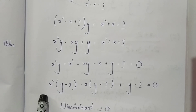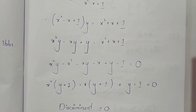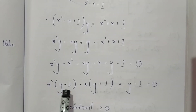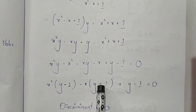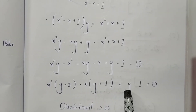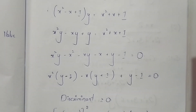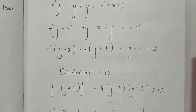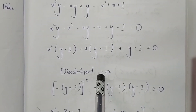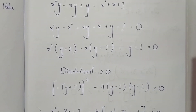This is a quadratic expression where a = (y - 1), b = -(y + 1), and c = (y - 1). Since this quadratic expression must have real values, the discriminant must be greater than or equal to zero, that is b² - 4ac ≥ 0.